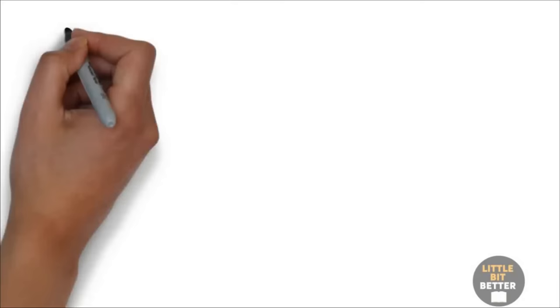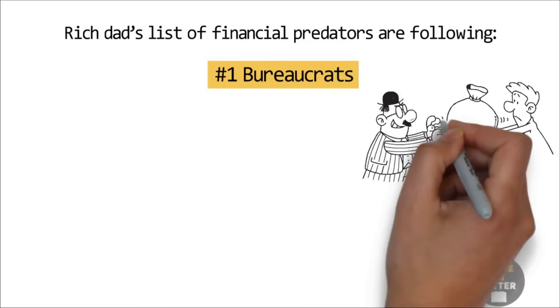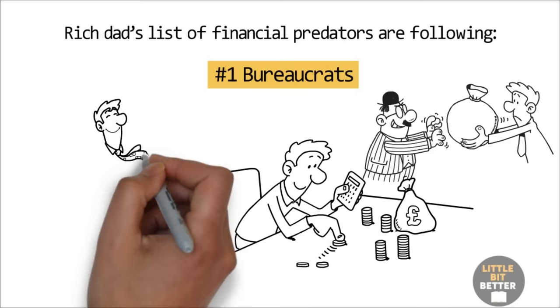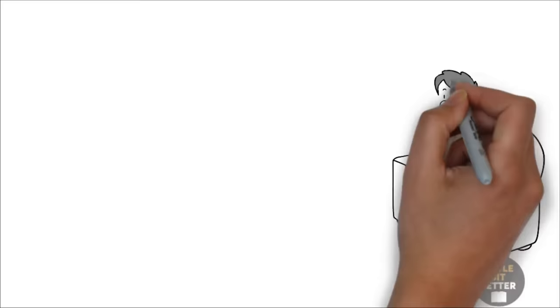Number one. Bureaucrats. As we all know, taxes are our single largest expense. The job of the tax department is to get your money and turn it over to a government bureaucrat who spends it. The problem with most bureaucrats is that they are very good at spending money. They do not know how to make money, which may be why they choose to become bureaucrats. If they could make money, they would probably be business people instead of bureaucrats. Since they do not know how to make money, but love to spend it, bureaucrats spend a lot of time figuring out more and creative ways to take our money via taxes.